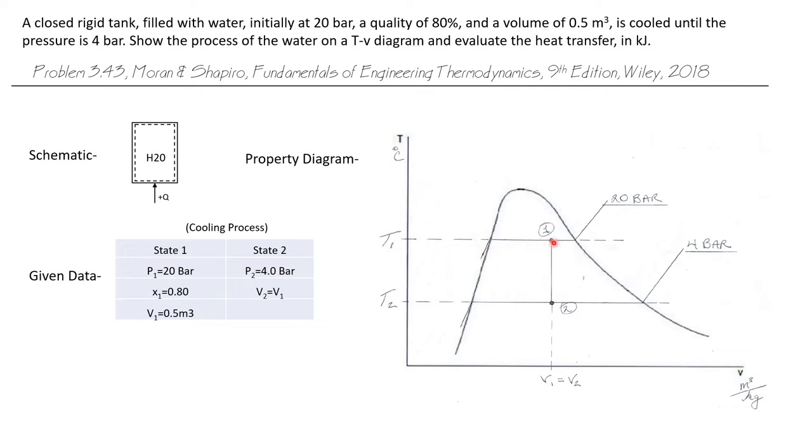Let's draw this on a T-v diagram. State 1, we know it's a saturated mixture, so it's underneath the vapor dome. Let's lay in a constant pressure line and we'll call that 20 bar. The quality at state 1 is 80%, so I'm going to draw state 1 here on this 20 bar pressure line, over here in the right side of the vapor dome, because the quality is 80%.